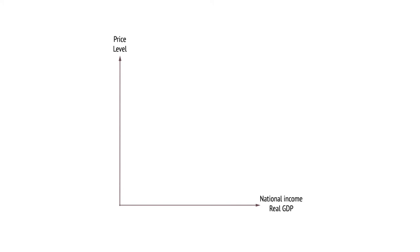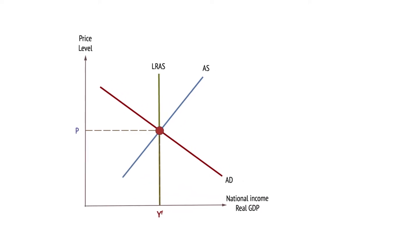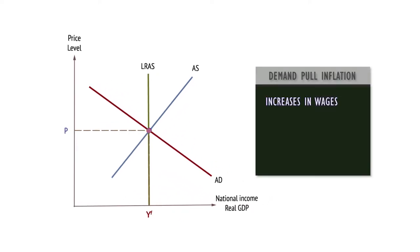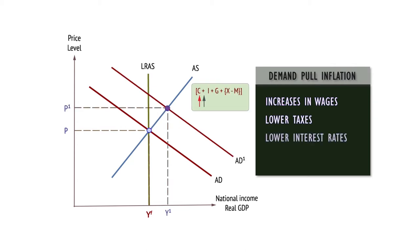Demand-pull inflation occurs when AD increases above the capacity of the economy. Demand-pull inflation could arise from increases in wages or lower indirect tax, which stimulates consumption, or through a monetary variable such as lower interest rates or increased money supply. The AD curve shifts to the right.